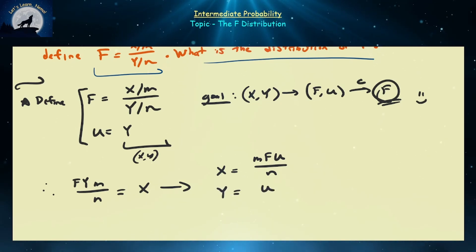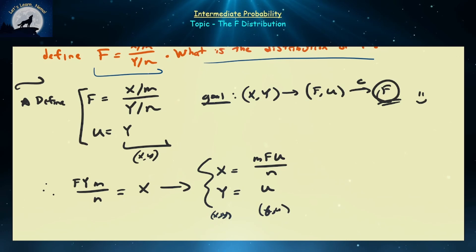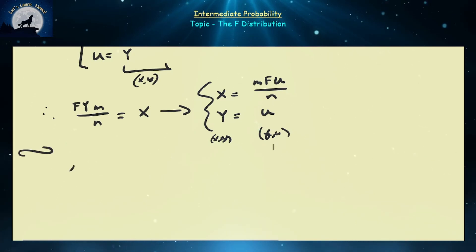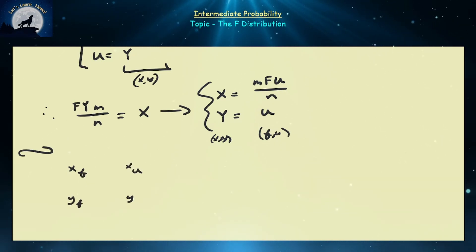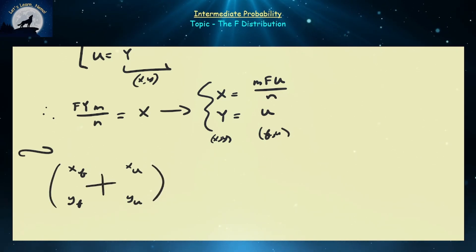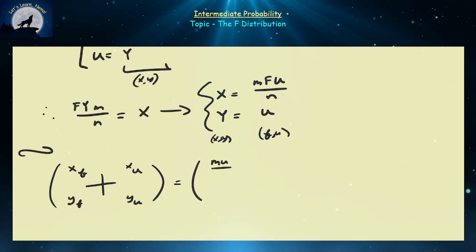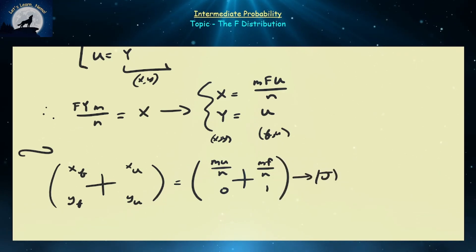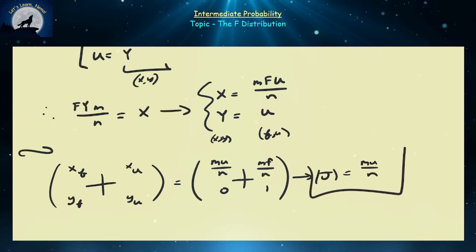With X and Y on the left-hand side and f and u as the new variables on the right-hand side, we build our Jacobian for the transformation. We need partial derivatives: X with respect to F, X with respect to U, Y with respect to F, and Y with respect to U. The partial derivative of X with respect to F is MU divided by N. Y with respect to F is 0 since Y has no F. Y with respect to U is 1. Therefore the determinant of our Jacobian is MU over N, which is a positive number.